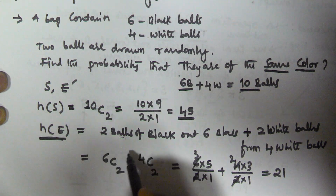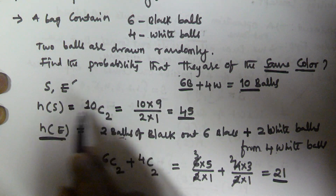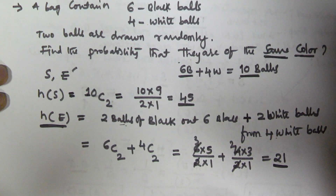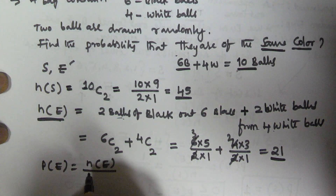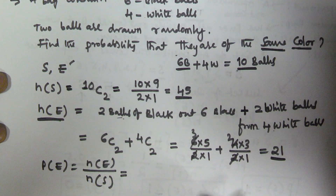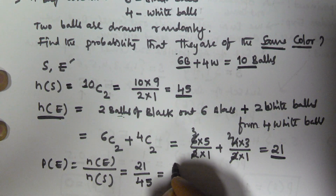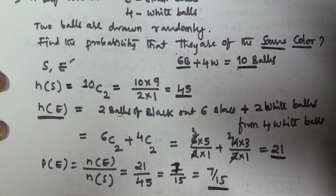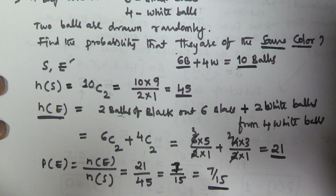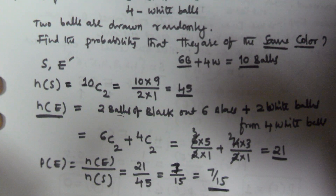The cardinality of the event — selecting 2 black balls or 2 white balls — is 21, and the total number of elements in the sample space is 45. So the probability of the event is P(E) = n(E) / n(S) = 21/45 = 7/15. So 7/15 is the probability of selecting 2 balls of the same color from the bag — that may be black or white. I hope you got this. Thank you very much for watching this video, and please subscribe to my channel.